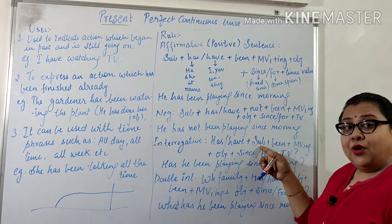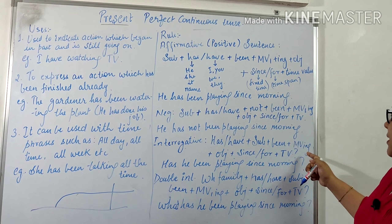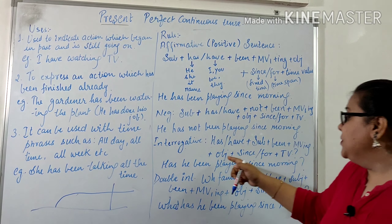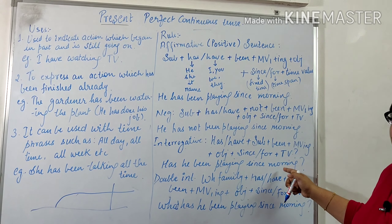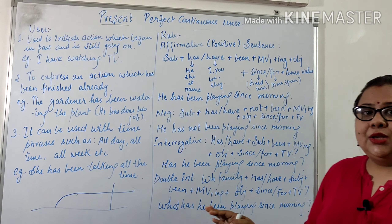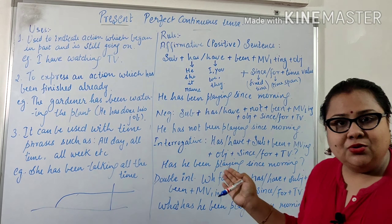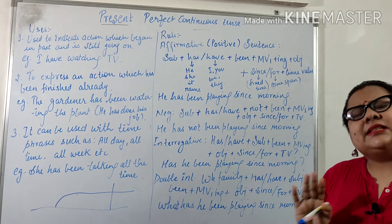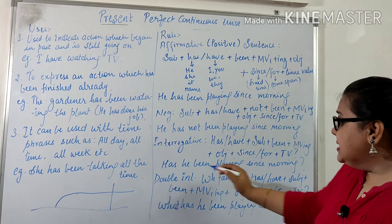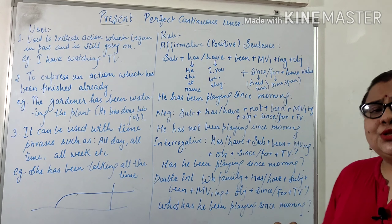In the interrogative, has/have comes first, then the subject, followed by been + main verb (first form + ing) + object + since/for + time value. It's not always necessary to use a time value — it can be omitted in some cases. For example: 'Has he been playing since morning?'